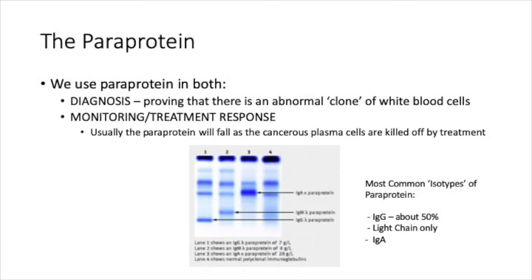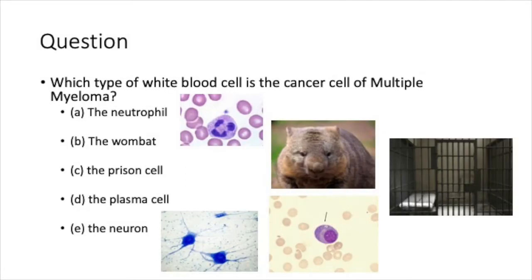Now for a question: which type of white blood cell is the cancer cell of multiple myeloma? Is it A, the neutrophil; B, the wombat; C, the prison cell; D, the plasma cell; or E, the neuron? The answer is D — the plasma cell. Excellent. Was that question too easy? Maybe the next question will be harder.